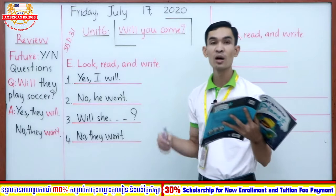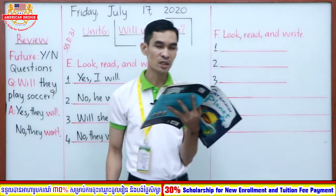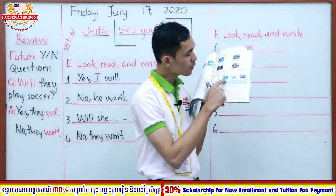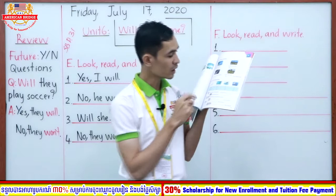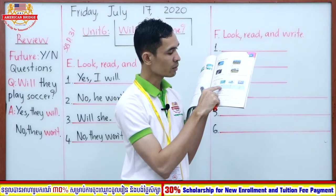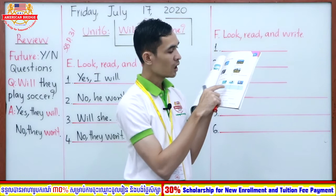So now let's continue to letter F. Look, read and write — the same, right? But here it's a little bit different. You can look at the chart: 'Plan for tomorrow.' We have: go to the beach, swim, watch a movie. The characters are Holy, Andy, Cam and Clara. Holy: go to the beach — no. Andy: go to the beach — yes. Cam and Clara: go to the beach — yes.